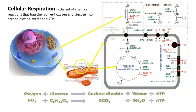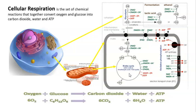If we make the mitochondria larger, we can see that there is the matrix in the middle, and the matrix is where the Krebs cycle, or citric acid cycle, or tricarboxylic acid cycle will happen.